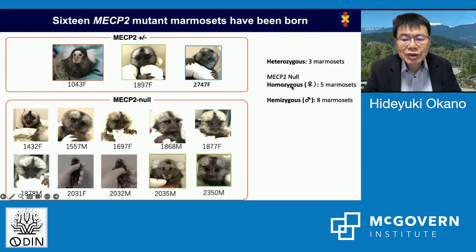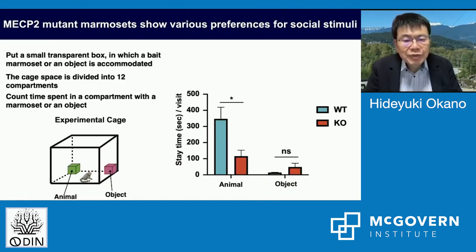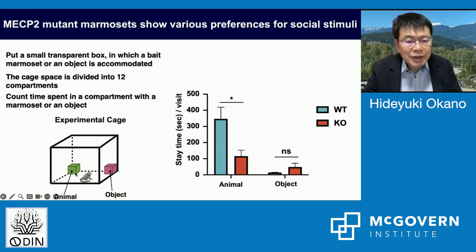The MeCP2 mutant marmosets show very early postnatal lethality with a median survival of 136 days. Regarding behavior, they show reduced spontaneous behavior and altered preference in social behaviors. We examined social behavior with a three-chamber assay system, and when the MeCP2 mutant marmoset was tested — having the choice of the animal side and object side — the MeCP2 knockout marmoset showed different preferences for the social stimulus.